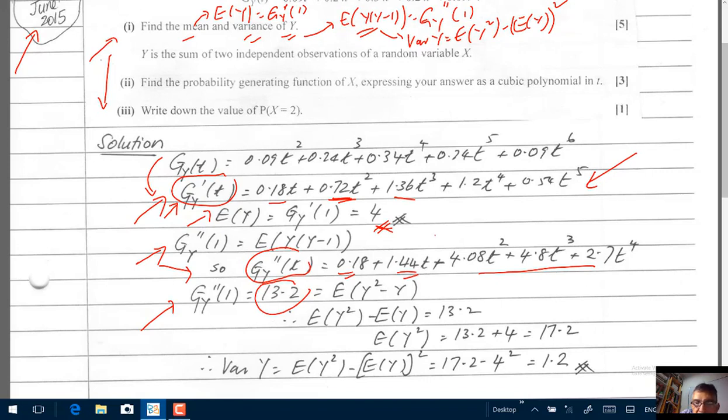Plug in 1 here, where you see t, you plug in 1, and you will get this thing here, which is 13.2, and that will be equals to the expected value of Y² minus Y. So, we can write the expected value of Y² minus the expected value of Y equals to 13.2. So, the expected value of Y² will be 13.2 plus 4, which will be 17.2.